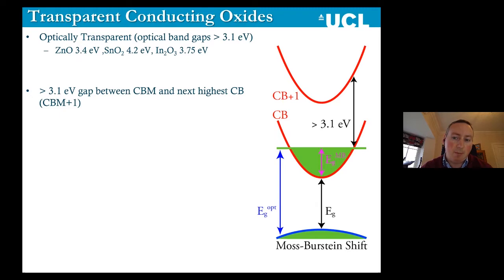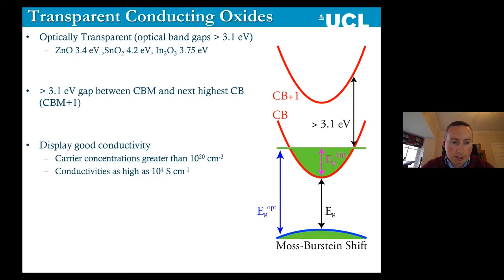These materials — zinc oxide, tin dioxide, and indium oxide — all have the ideal electronic structure where they can maintain transparency while being highly defective. These materials display good conductivity; they normally have carrier concentrations greater than 10²⁰ per centimeter cubed and conductivities as high as 10⁴. The conductivity of a metal is normally around 10⁶, so we're getting quite close to metallic conductivity.